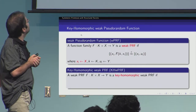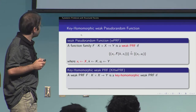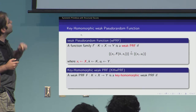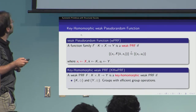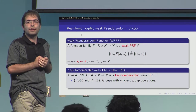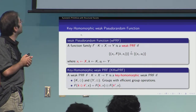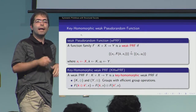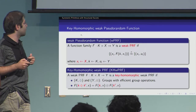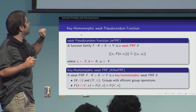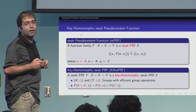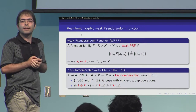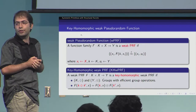We say that a weak PRF is keyhomomorphic if the key space and output space are groups with efficiently computable group operations, and it satisfies the keyhomomorphism property: given any two keys K and K prime and any input X, we have F(K + K', X) = F(K, X) · F(K', X). We use plus for the group operation on the key space and times for the group operation on the output space.